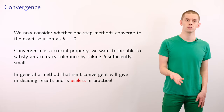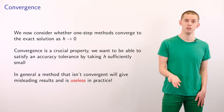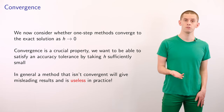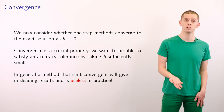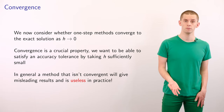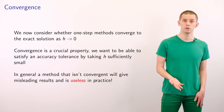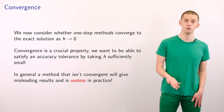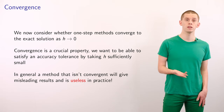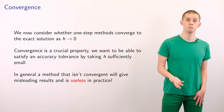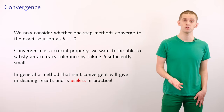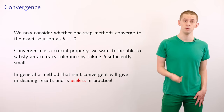We'll now consider whether one-step methods converge to the exact solution as our numerical step size h tends to 0. Convergence is a crucial property since we want to be able to satisfy an accuracy tolerance by taking h sufficiently small. In general, if we have a method that isn't convergent then it can give misleading results and be really useless in practice. In the field of scientific computing it's therefore very important to be able to demonstrate the convergence of different numerical methods.